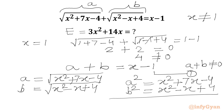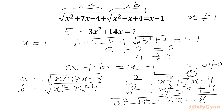Now we subtract b² from a². The x² terms cancel, so in the LHS we write a² minus b², and in the RHS we write 7x plus x = 8x, and -4 minus 4 = -8. So a² - b² = 8(x - 1). Remember x minus 1 equals a plus b from equation number 1.